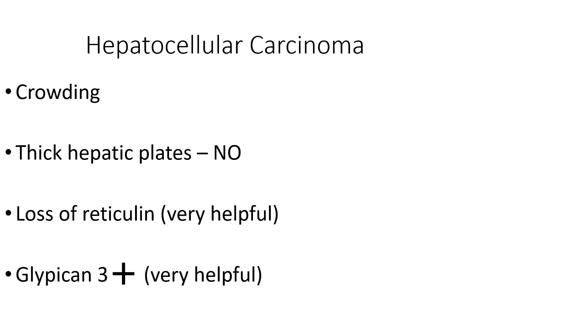But that important question: did the control work? Yes, it did. And by Jove — look at that glypican-3: it is diffusely and strongly positive. Any naysayers? None. This is HCC, period. Tallying the evidence: crowding, definitely. Thickened hepatic plates — not there, but that's not uncommon, as many HCCs have a solid pattern. Loss of reticulin — incredibly helpful. Glypican-3 — the most helpful feature. There is no doubt this is hepatocellular carcinoma. The heaviest emphasis I generally place is on the H&E stain.